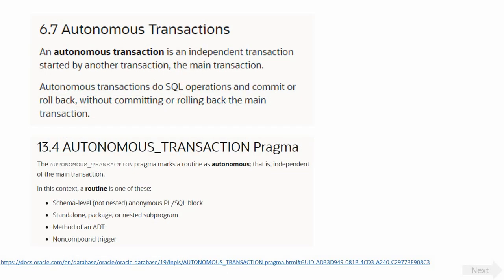According to Oracle documentation, an autonomous transaction is an independent transaction started from another transaction — which we normally call the parent transaction. Another key point: we must put a COMMIT or ROLLBACK within the autonomous transaction, otherwise you will get a runtime error. Only after completing the child transaction will control return to the parent transaction. Autonomous transactions can be defined in an anonymous block, a procedure, a function, a trigger, or a method written as part of a type.